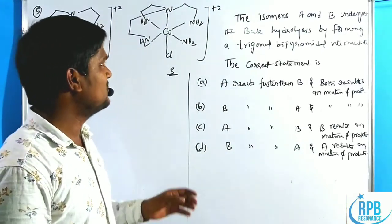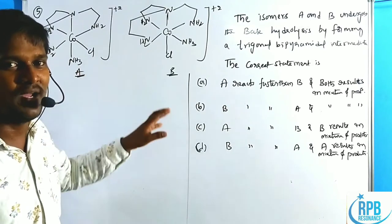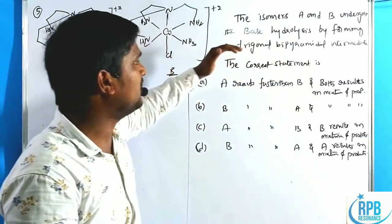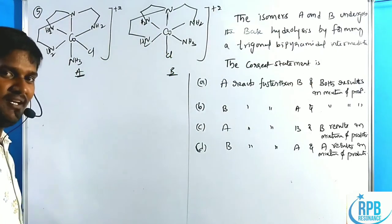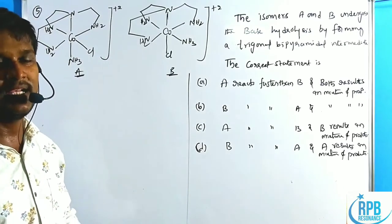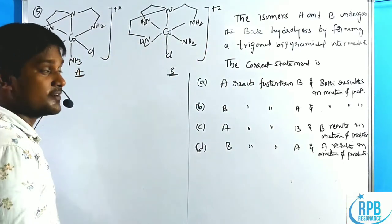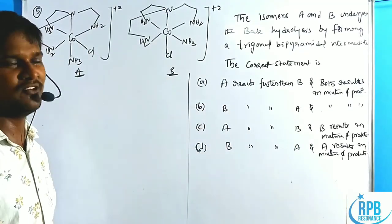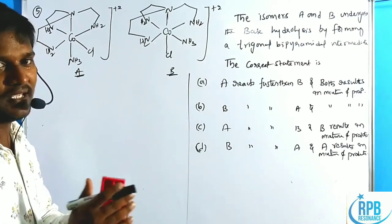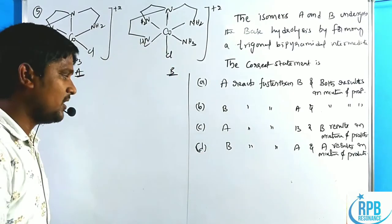Now for another interesting problem on conjugate base mechanism: two isomers — A (red isomer) and B (purple isomer) — of a cobalt complex [Co(en)(NH3)Cl]²⁺ undergo base hydrolysis giving a trigonal bipyramidal intermediate. Trigonal bipyramidal means coordination number five, so this follows the Id (dissociative interchange) mechanism. The options are: A reacts faster than B, both give mixture of products; B reacts faster than A, both give mixture of products; A reacts faster than B but only B gives mixture of products; B reacts faster than A but only A gives mixture of products.